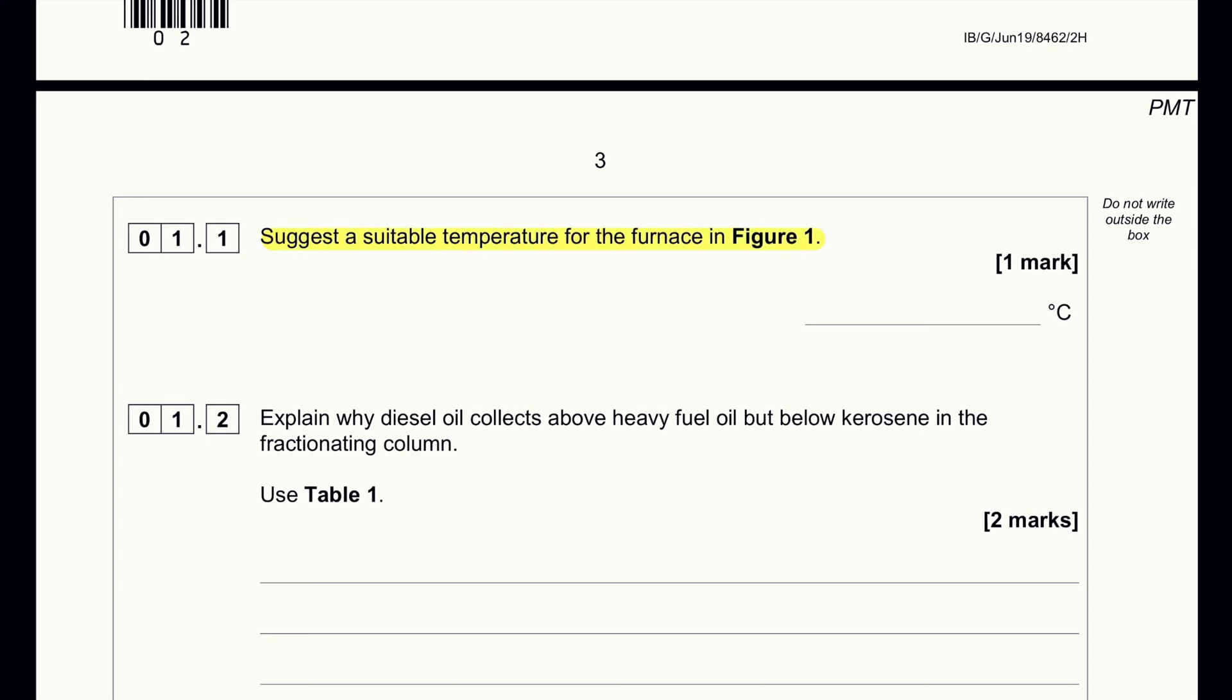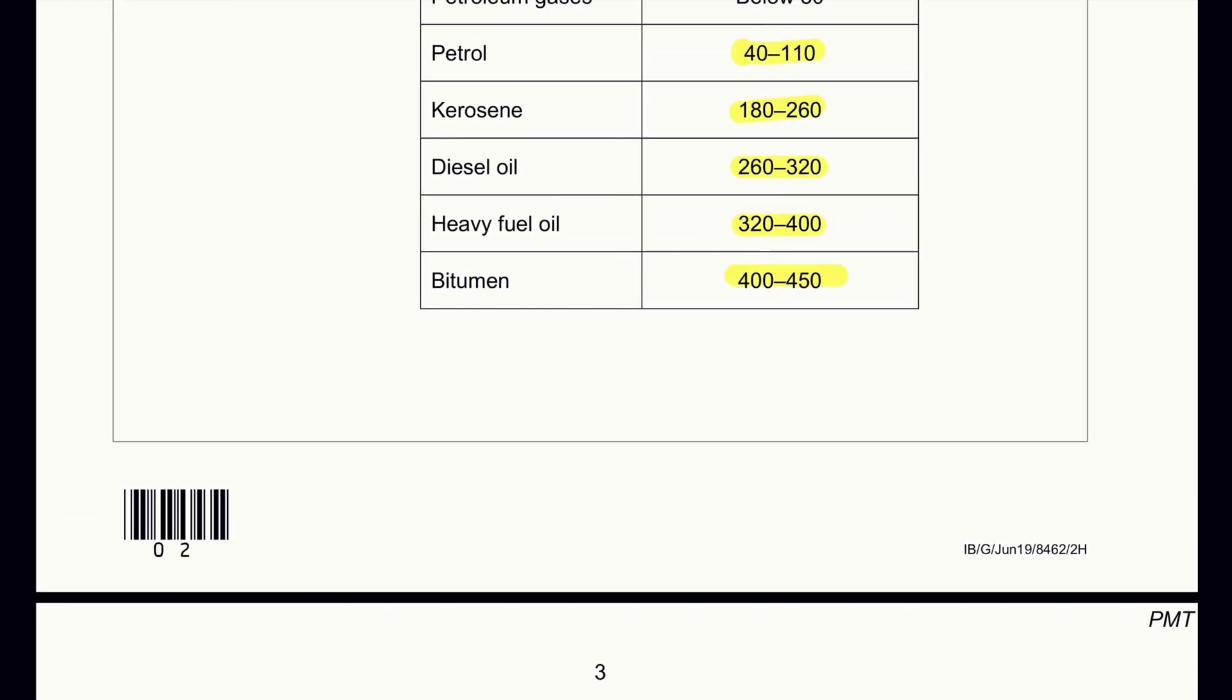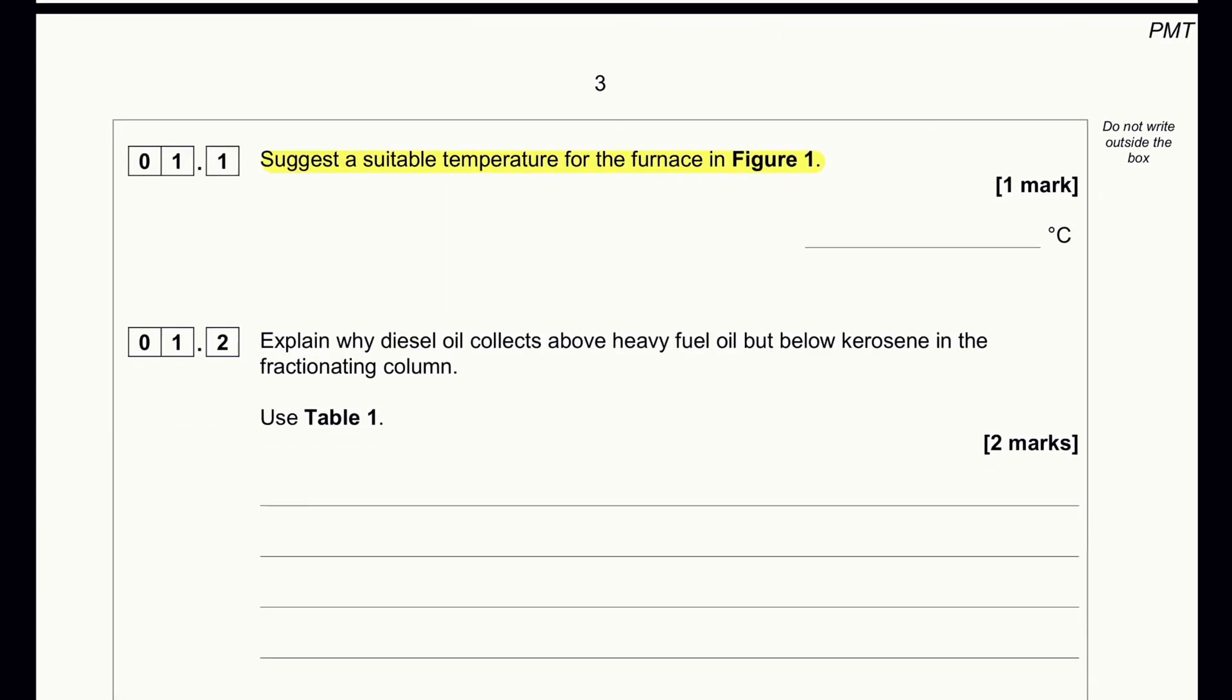So this is suitable temperature for the furnace in figure 1. Since bitumen is collected at 450 degrees Celsius, in order to vaporize bitumen, boil bitumen, we have to have the temperature higher than that, 450 degrees Celsius. So we can have a temperature of 500 degrees Celsius.